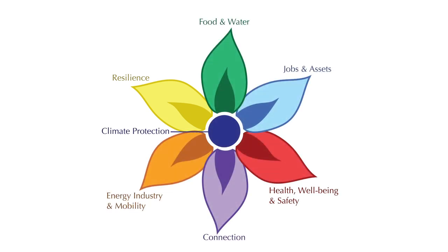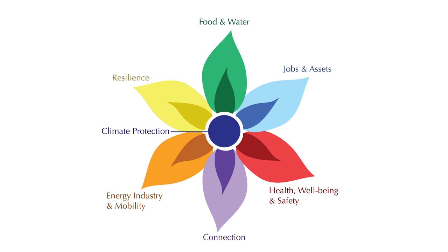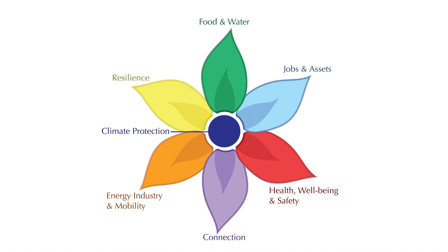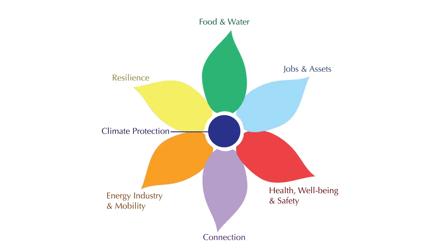Just as important as noting the benefits of a project is noting who will receive those benefits. As a FLOWER user, you can shade each petal to show how the benefits are distributed. Shading the center of a petal indicates the benefits are going toward people who are already privileged and well-off. For example, a policy that promoted electric cars would only be available to people who can afford a car and obtain a driver's license. This outer shading means the benefits are going toward more marginalized and underserved populations. An example would be a program that creates a pedestrian walkway in a community of color. It's also possible that everyone will receive the benefits of some projects, regardless of their degree of marginalization — in that case, we don't use any extra shading.